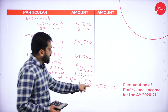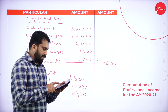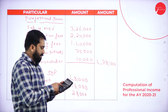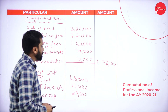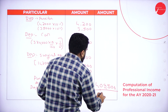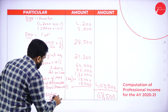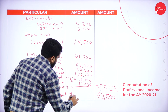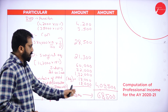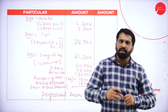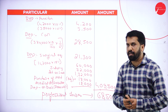Professional income: 4,78,100. Less professional expenses: 4,09,500. We get a net professional income of 68,500. That is your professional income. Hope you are clear.